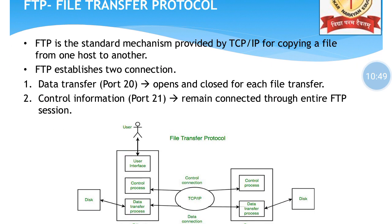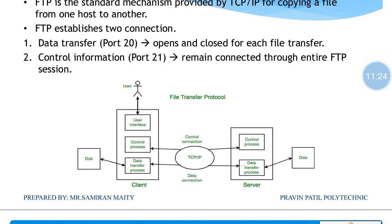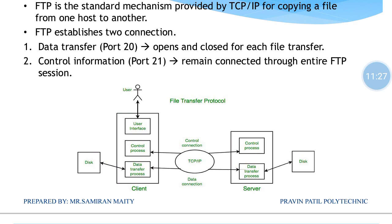FTP is the standard mechanism provided by TCP/IP for copying a file from one host to another. We have already configured this using Cisco Packet Tracer. FTP establishes two connections: data transfer using port 20, which opens and closes for each file transfer, and control information using port 21, which remains connected throughout the entire FTP session.